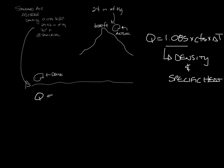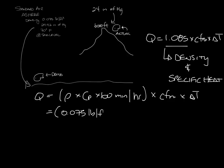So the load equation actually looks like this: Q equals the density times the specific heat times the conversion of minutes per hour, so 60 minutes per hour, times CFM times delta T. So for standard air, this equals 0.075 pounds per cubic feet times 0.241 BTU per pound per degree Fahrenheit times the 60 times CFM times delta T.